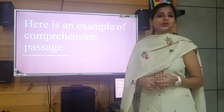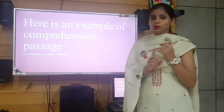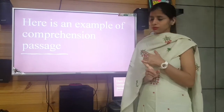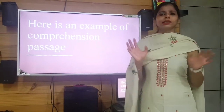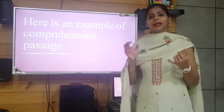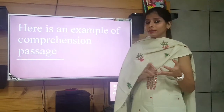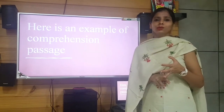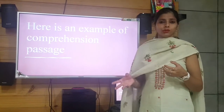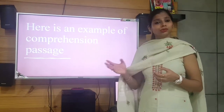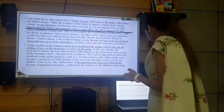Before moving to the comprehension passage example, let me discuss the kinds of questions you will be getting. First, you will get simple straightforward questions that you will easily be able to answer — these are objective type. Second, you will get synonyms and antonyms. Third, you will get MCQs with 4 options where you need to select the best option. These are the kinds of questions you will encounter in the passage.